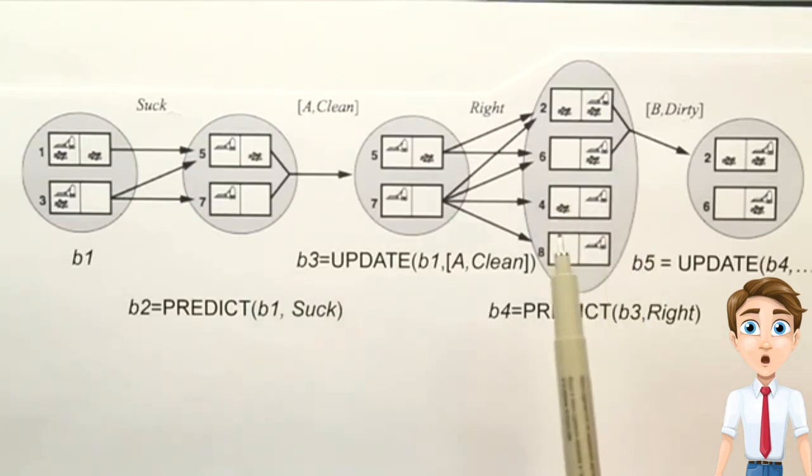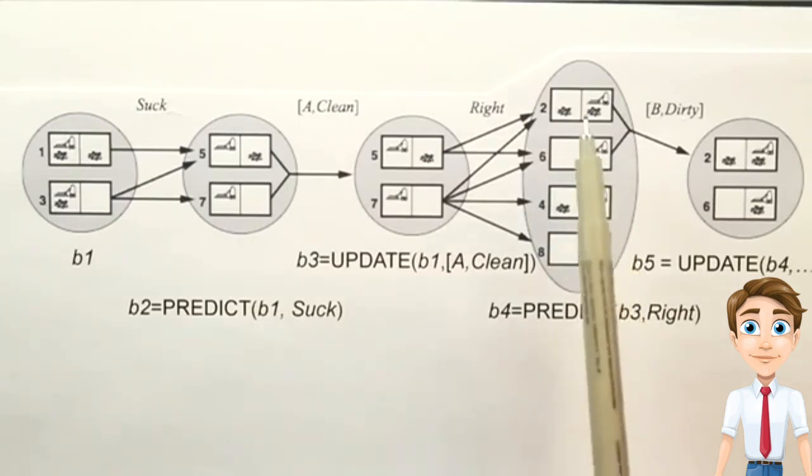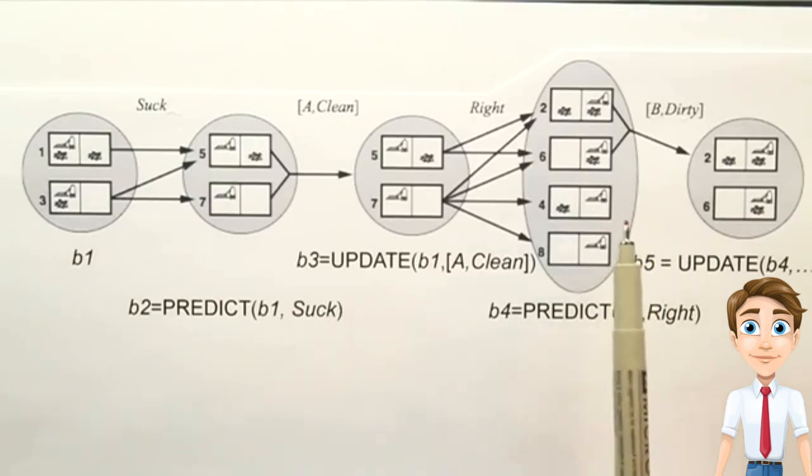So the whole world could be represented by three states, or three variables. One, where is the vacuum? Is it on the right or not? Secondly, is there dirt in the left location? And third, is there dirt in the right location? And we can have some formula over those variables to describe states.